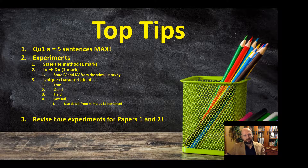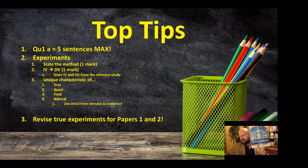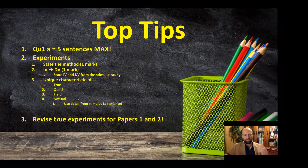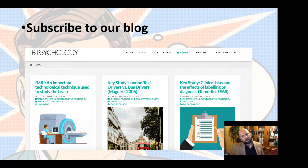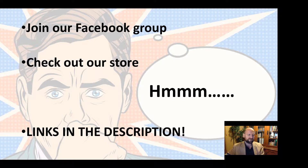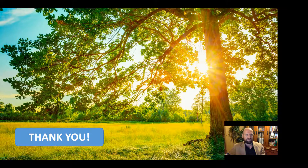One more tip: for Papers 1 and 2, I recommend revising only true experiments and correlational studies — they're the most common and easiest to distinguish, and it cuts down content while building deep understanding. As usual, I hope that was helpful. There's a blog with study posts coming out, Facebook groups for students and teachers, and a revision guide — all linked in the description. Good luck preparing for Paper 3 on experiments!